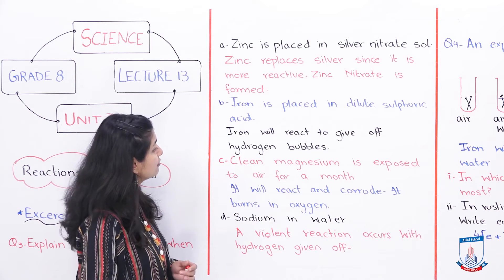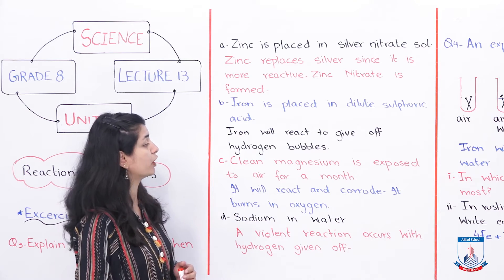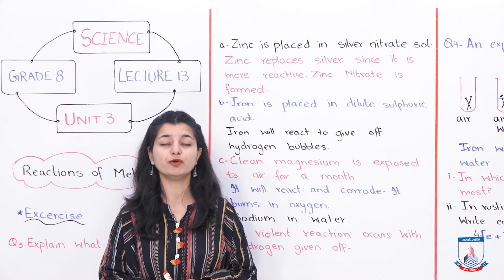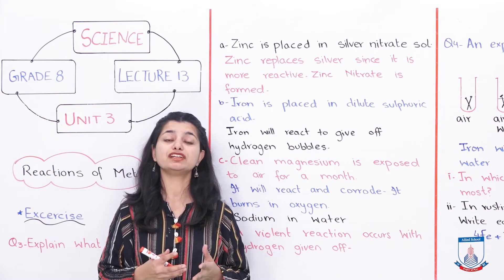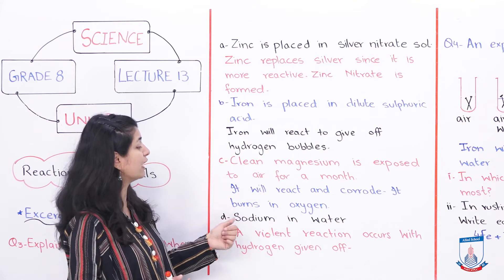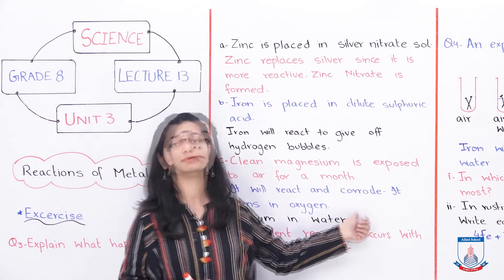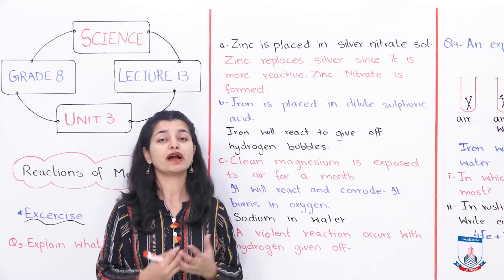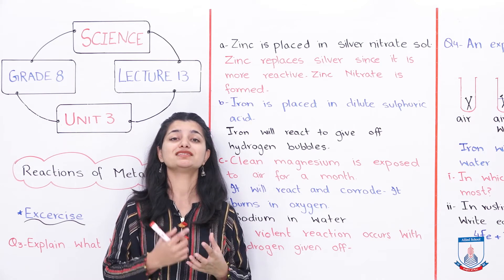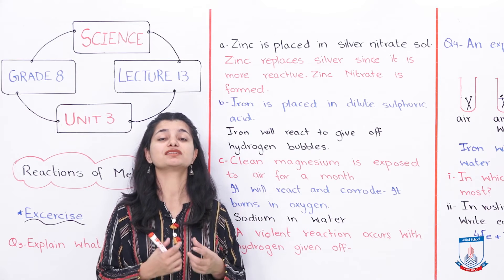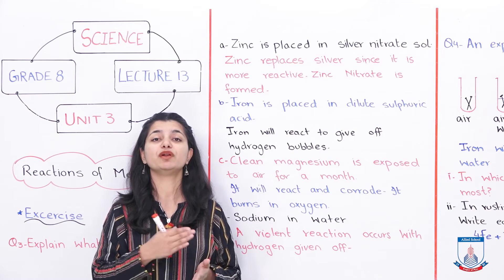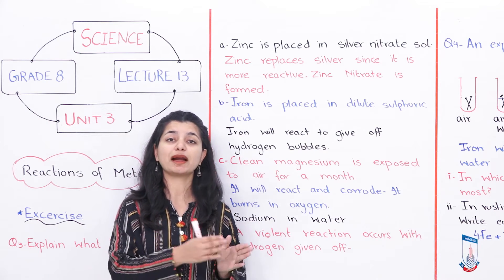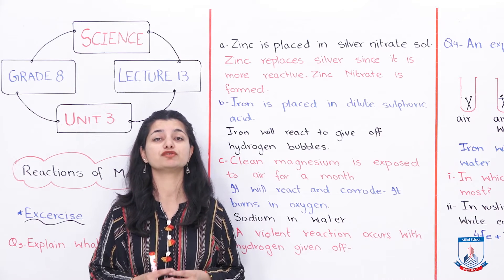Part C demands: clean magnesium is exposed to air for a month. Magnesium has been exposed to air. If you look at the table on page 34, how does magnesium react with air? Magnesium reacts very quickly. It will corrode, and it burns in oxygen. Basically, magnesium burns if it reacts with oxygen. If it is in air, the reaction will not be very violent, but it will react quickly. So you can explain that it will corrode, and if in contact with oxygen, it will burn.